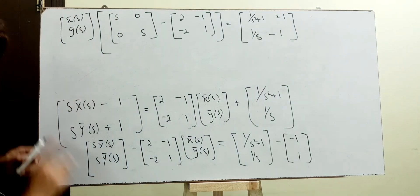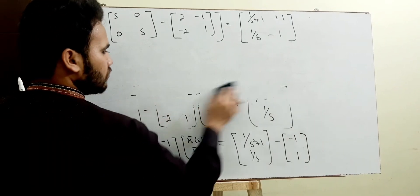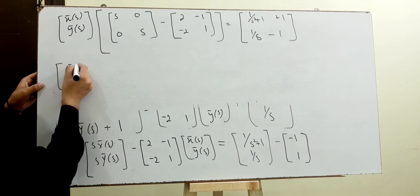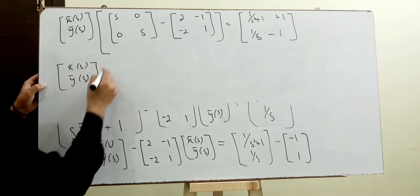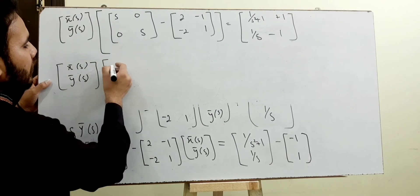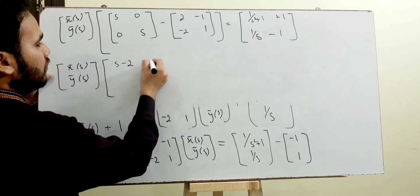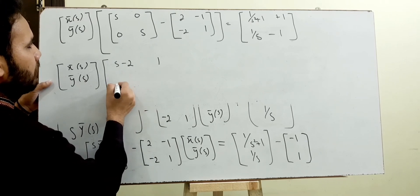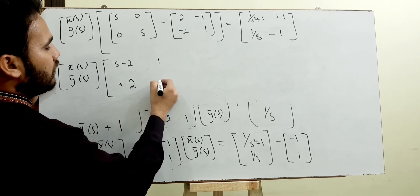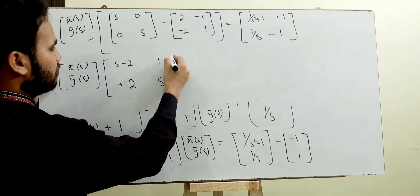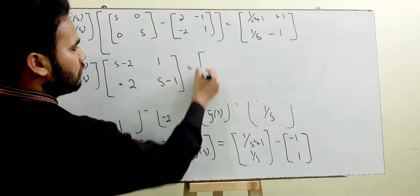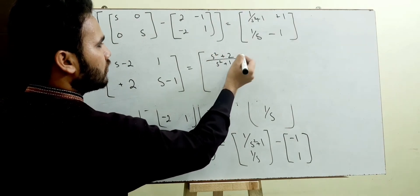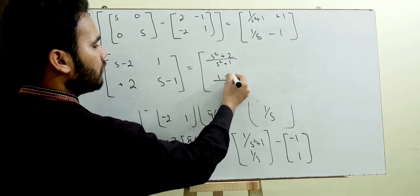Combining the left-hand side into one matrix product, [X̄(s); Ȳ(s)] times the matrix [s-2, 1; 2, s-1] equals the right-hand side vector [(s²+2)/(s²+1); (1-s)/s].